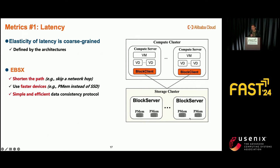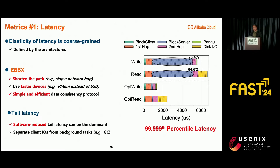Clearly, the key to improving average latency is reducing hardware processing overhead. Therefore, we built EBSX targeting latency-sensitive scenarios. EBSX installs persistent memory inside the block servers and directly stores data in P-memory with 3-way replication. Compared to EBS2 and EBS3, EBSX escapes the second-hop network and drastically speeds up disk I/O with P-memory. For space efficiency, data in P-memory is eventually flushed to Pangu. This figure presents the breakdown of 99th percentile latency — a common threshold for defining tail latency — among EBS3 clusters.